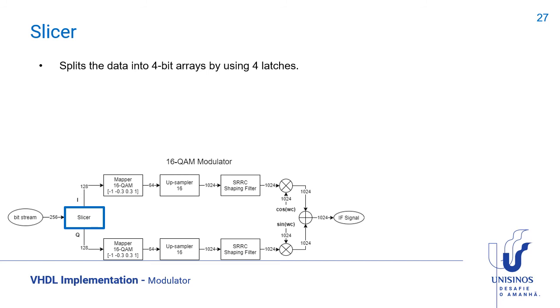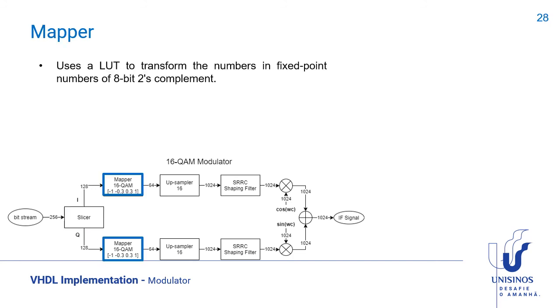Now we have the information of the in-phase arm and information from the quadrature arm. The mapper uses a lookup table to transform the numbers in fixed-point numbers of 8 bits using 2's complement.